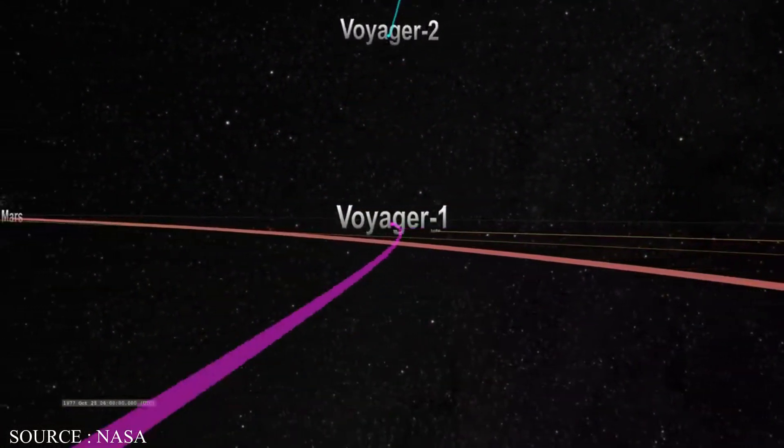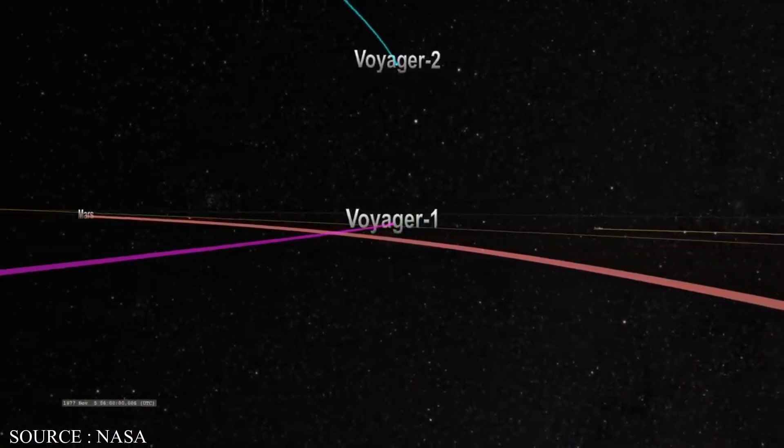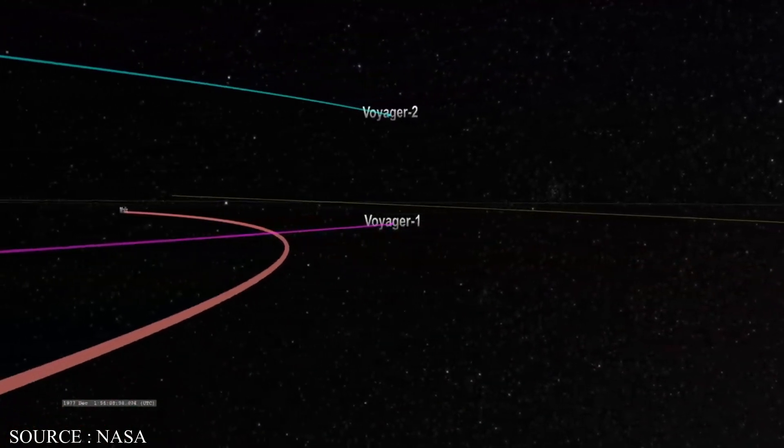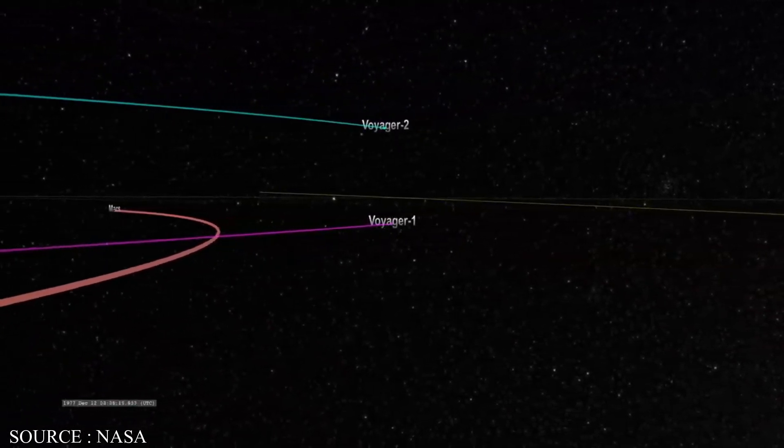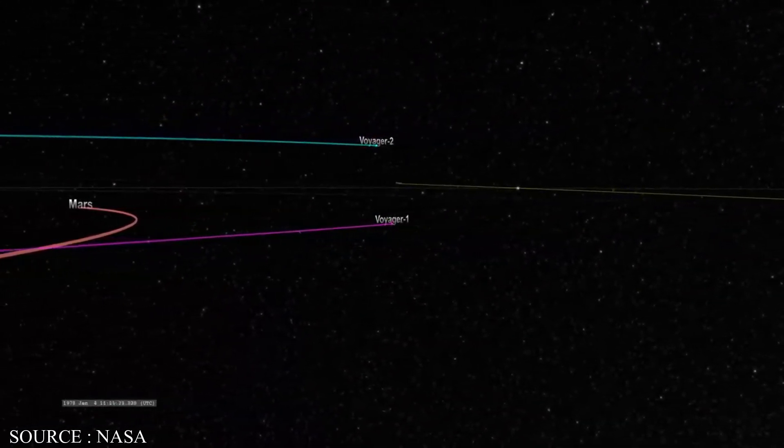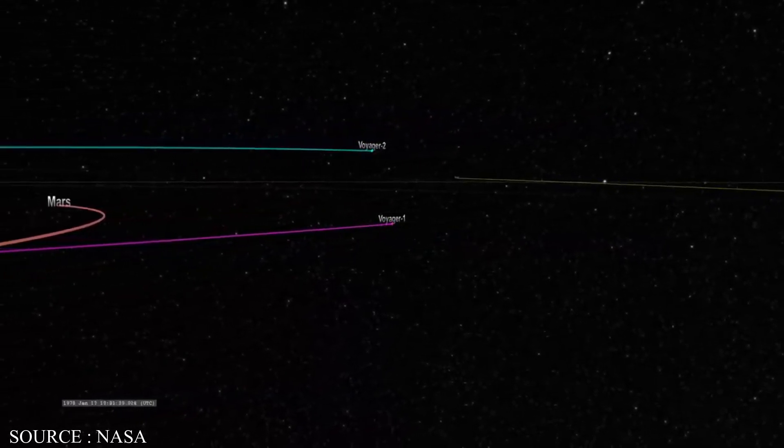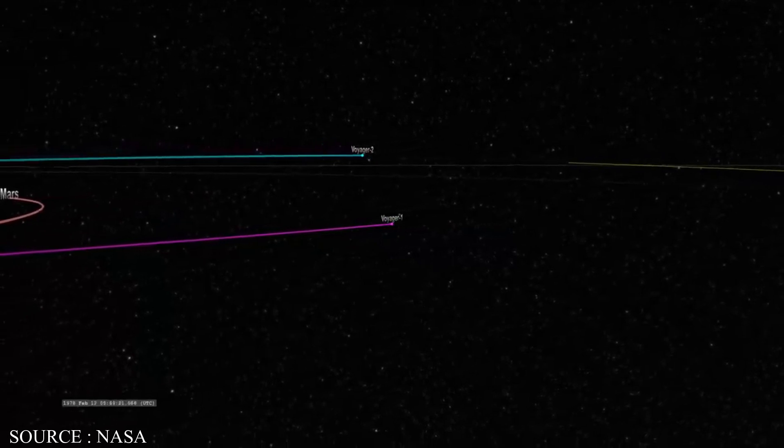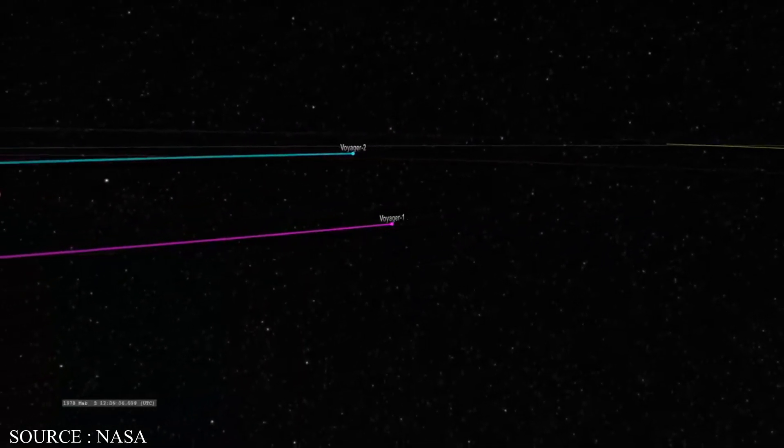Voyager 1 and Voyager 2 went beyond the outer planets and into parts of space that not many people thought could be studied in such detail. The edge of our solar system used to be just an idea in astronomy books, but these brave travelers turned it into a real place. Their experiences with the heliosphere and the heliopause have taught us a lot.